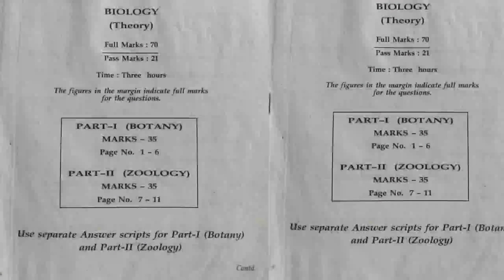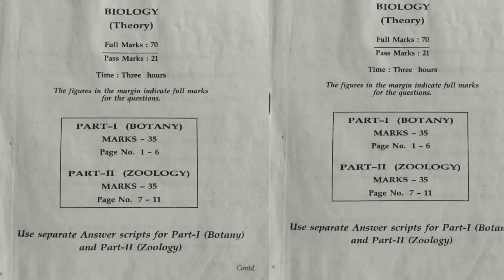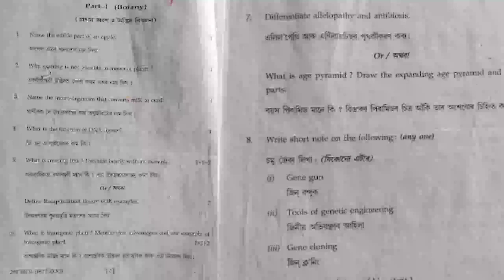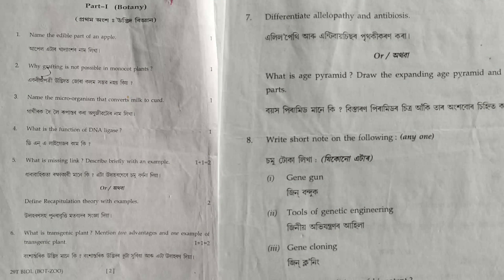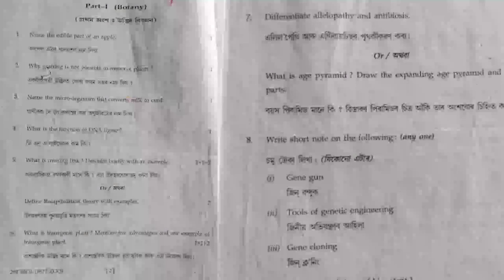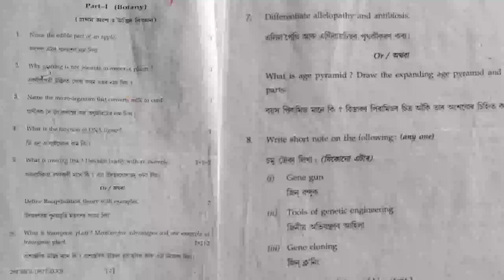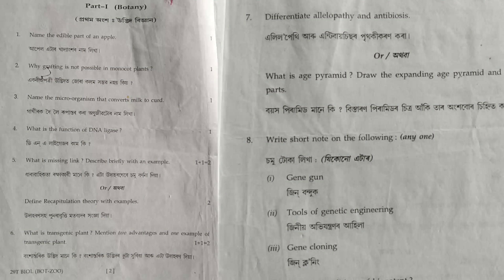The first question was: name the edible part of an apple. The answer is the edible part of an apple is the thalamus. Next question: why is grafting not possible in monocot plants? The answer is because of the absence of cambium, grafting is not possible in monocot plants.